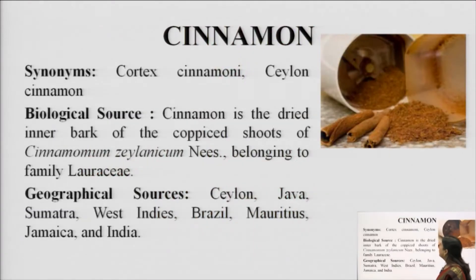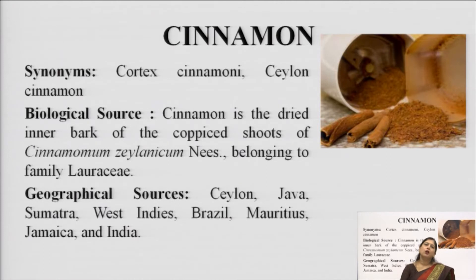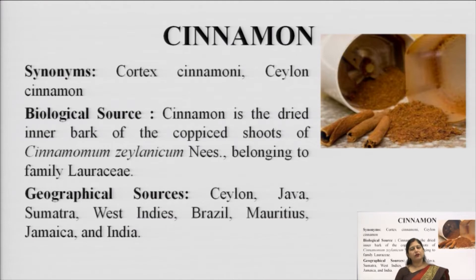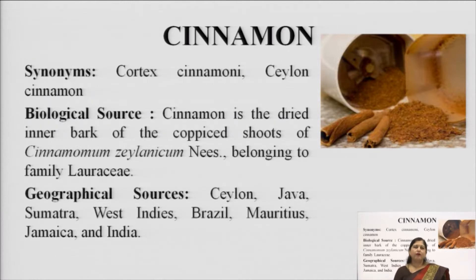We will start with cinnamon, which is a volatile oil containing drug. You must have heard of cinnamon — we commonly call it dal chini. It is used as a spice in our kitchen, but it is also a highly medicinal ingredient for its effects on the digestive system, the CNS, and the respiratory system. Its effects are well studied and well reported, making it a very important drug.